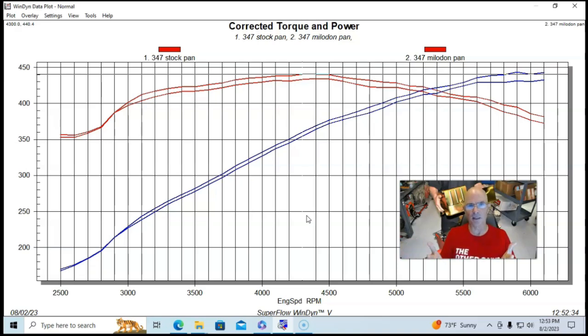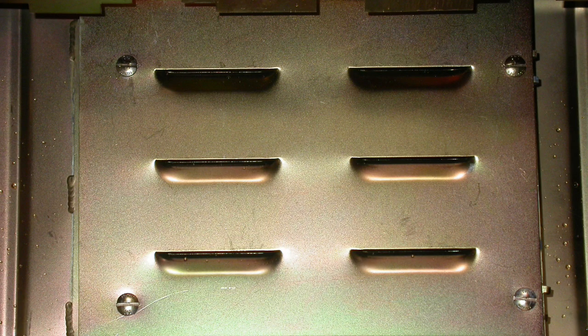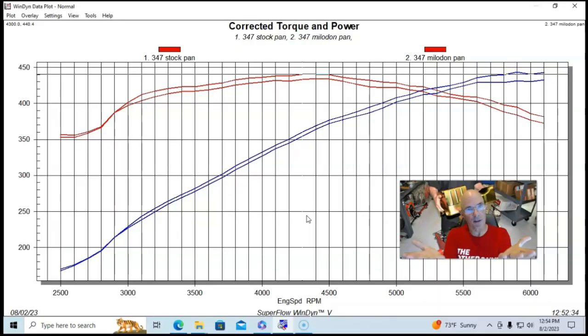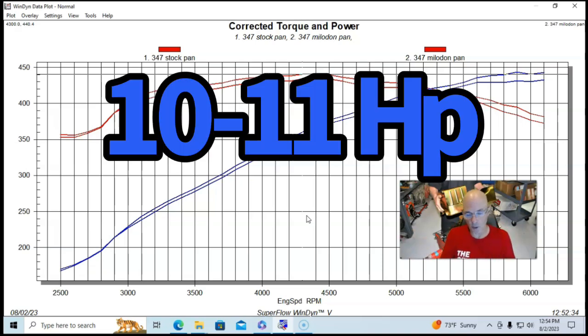The other thing that the Milodon pan had was an integrated windage tray, which obviously helps to stop some of the windage, therefore the name, windage tray. And the combination of the two actually picked up a pretty good bit of power. It was 10 or 12 horsepower, which is good.